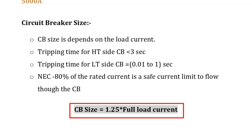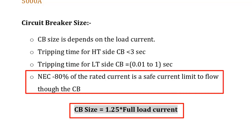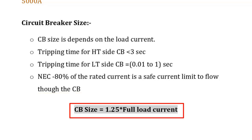In this formula, we are taking the circuit breaker size 25% extra of the rated current. According to NEC — the National Electrical Code — 80% of the rated current is a safe current limit to flow through the circuit breaker. So in the size calculation of the circuit breaker, we are taking a safety margin of 20%.